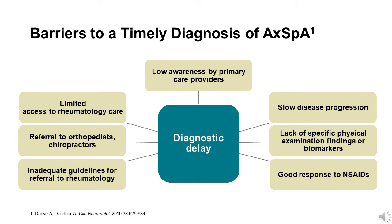Several factors may contribute to this delay in diagnosis, including the high prevalence of back pain most commonly due to mechanical etiologies in the general population. The lack of specific physical exam findings in patients with early axial SpA and absence of extra-spinal manifestations have been reported to impair early diagnosis. The lack of biomarkers unique to axial SpA, younger age at onset, and gradual disease onset may also contribute to delayed referral for evaluation by a rheumatologist. Instead, patients may be referred to and treated by orthopedists, physiatrists, chiropractors, and other providers in an attempt to relieve symptoms.